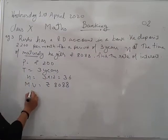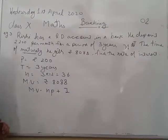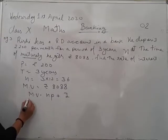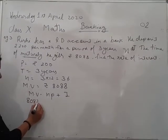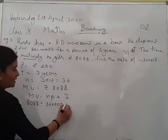Now write the formula for the maturity value first of all. You know the formula is NP plus I. Substitute the value in this one. It's 8088 equals to N is 36, P is 200 plus I.